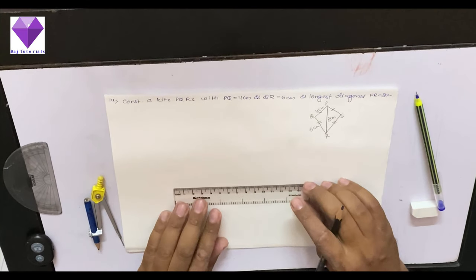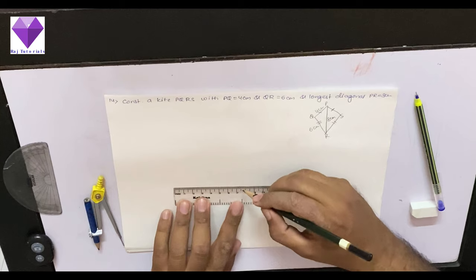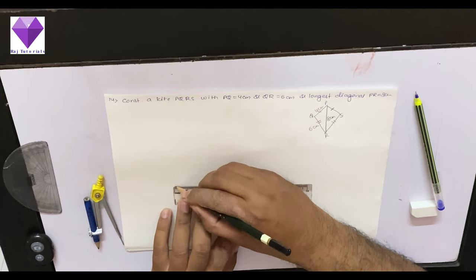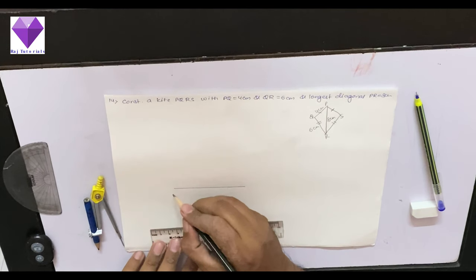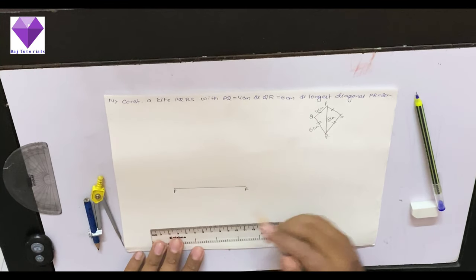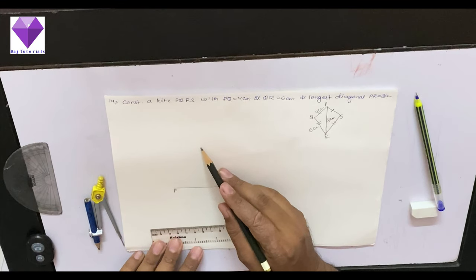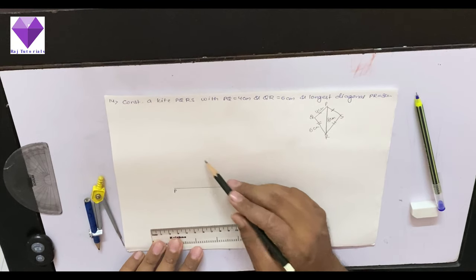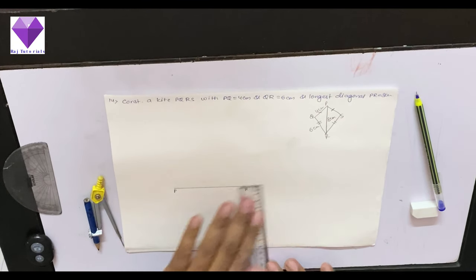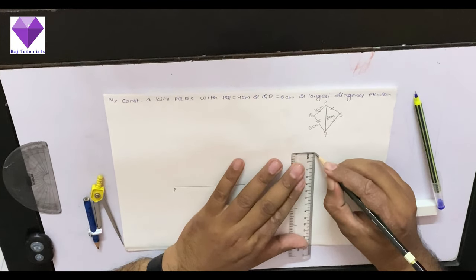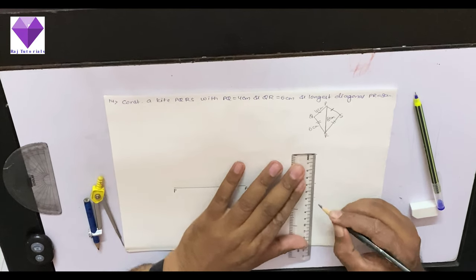So first I will be making an 8 cm line segment and give it the name PR. Now on this, on one side I will make an arc of 4 cm and on the other side 6 cm. So now I am preparing my 4 cm and 6 cm arcs.